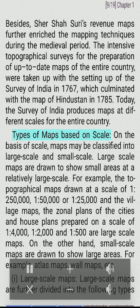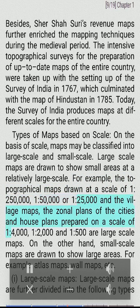Types of maps based on scale. On the basis of scale, maps may be classified into large-scale and small-scale. Large-scale maps are drawn to show small areas at a relatively large scale. For example, the topographical maps drawn at a scale of 1:250,000, 1:50,000 or 1:25,000; village maps; the zonal plans of cities and house plans prepared on a scale of 1:4,000, 1:2,000, 1:500 or larger are large-scale maps. On the other hand, small-scale maps are drawn to show large areas, for example atlas maps, wall maps, etc.